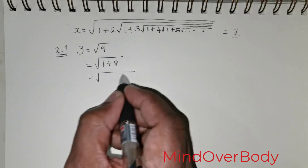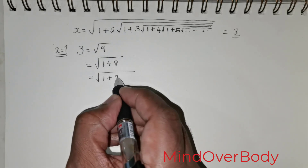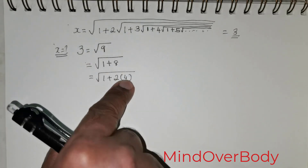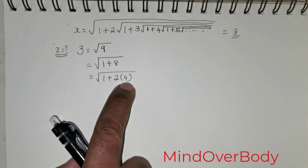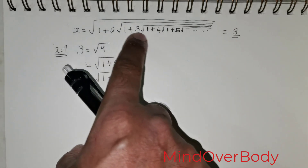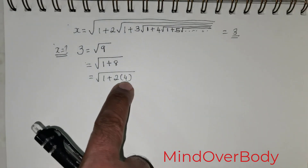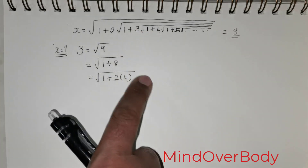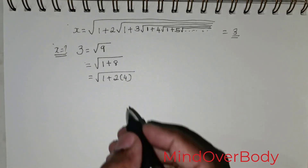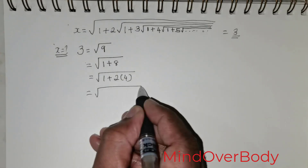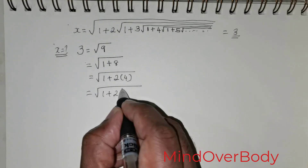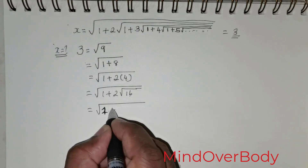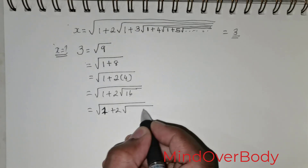I got an 8 here. I can write 8 as 2 times 4 — so I got a 2 and a 4. Now I need to write this 4 in such a way that I am able to produce this pattern. We should not be misled to write 4 as 1 + 3. Instead, I am going to write 4 as root of 16.